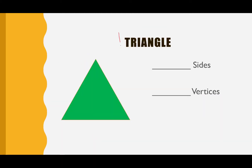Our next shape we're going to learn about is called the triangle. See if you can say that: triangle. Let's go over each letter: T, R, I, A, N, G, L, E. That spells triangle.